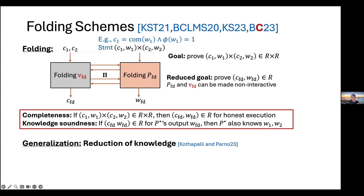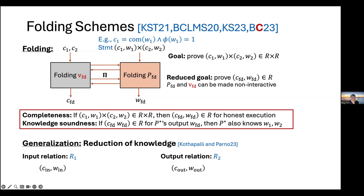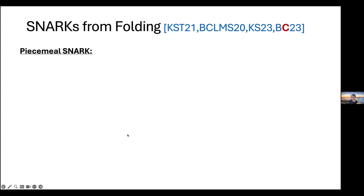You can generalize this to the notion of a reduction knowledge protocol, which reduces checking any input statements in relation R1 into checking output statements in relation R2. A folding scheme is a special case where R1 is defined as R × R and R2 is R — reducing two statements in R into one statement in R.